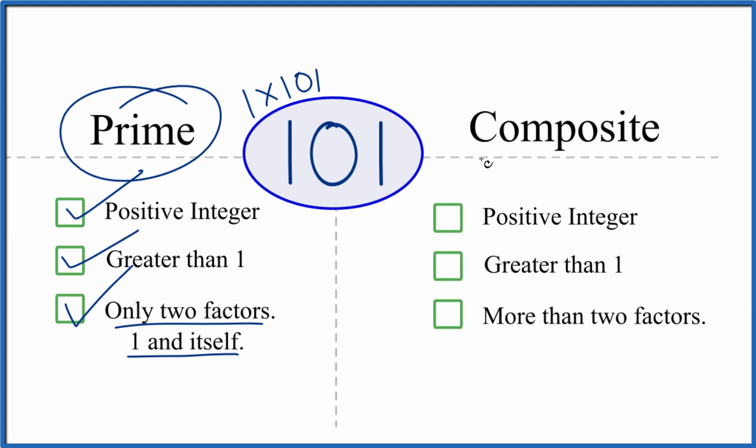But is it a composite number? Well, we have a positive integer, and it's greater than 1, and there are only two factors. So there's not more than two. So 101 is not a composite number.